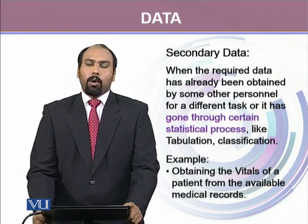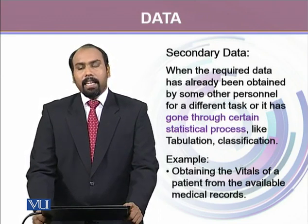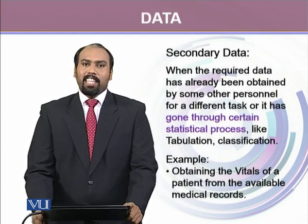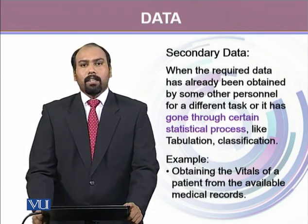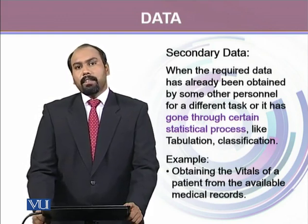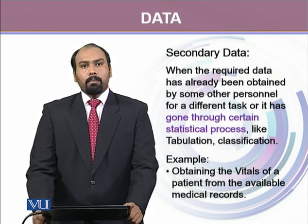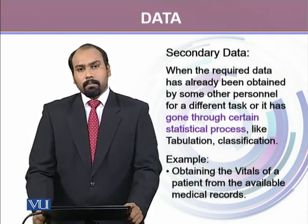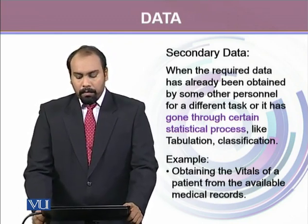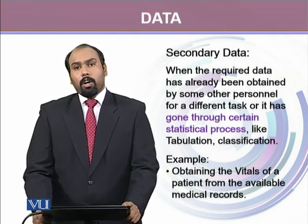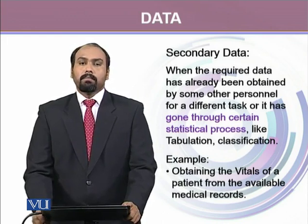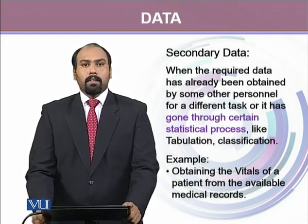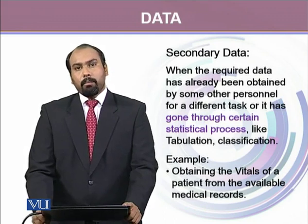The other type of data is called secondary data. Secondary data is data that has already gone through certain statistical procedures, a process of making tables, or has been organized in a certain way. Most of the time, secondary data are obtained from different sources where the data was already collected for a different purpose. For example, hospitals keep medical records of patients — if we take vitals from hospital medical records, that is considered secondary data because it's a second-hand source.